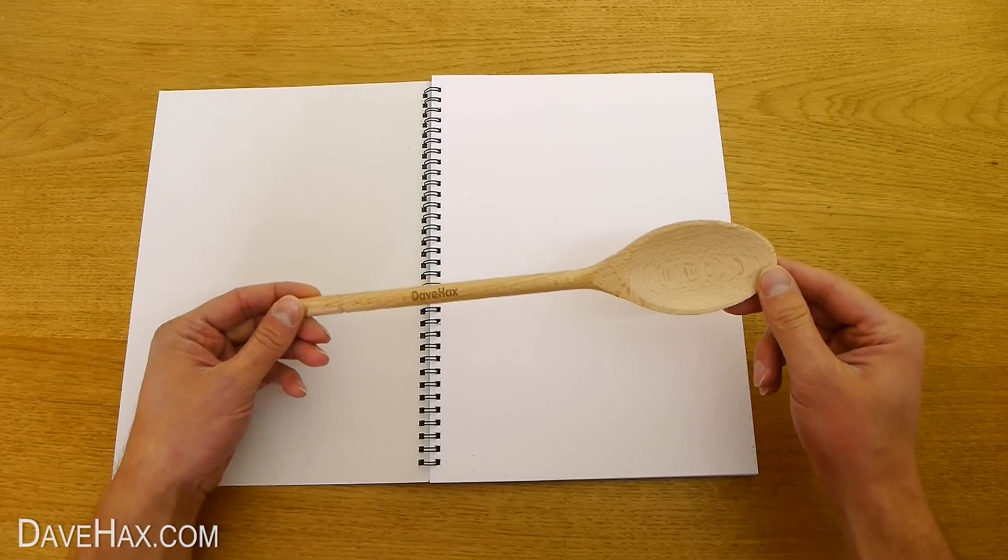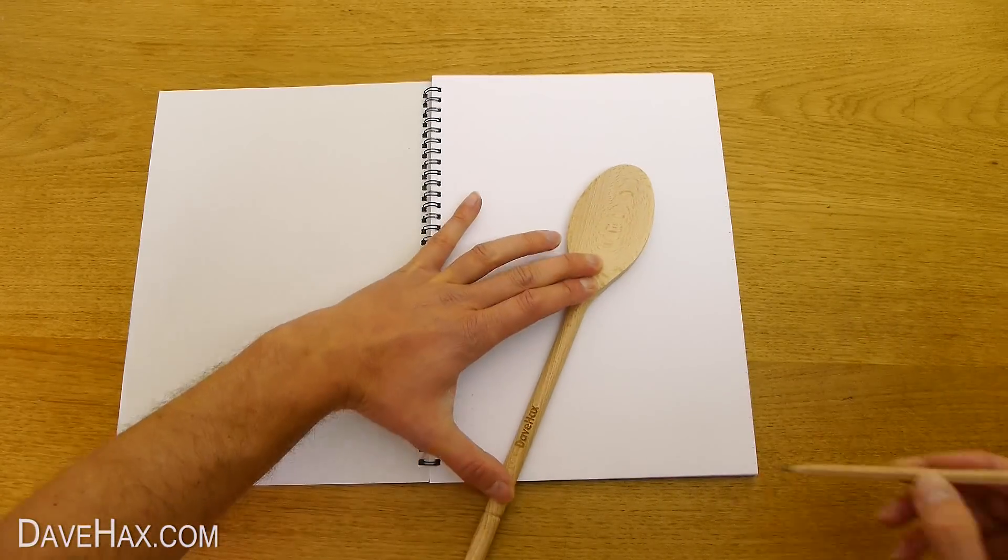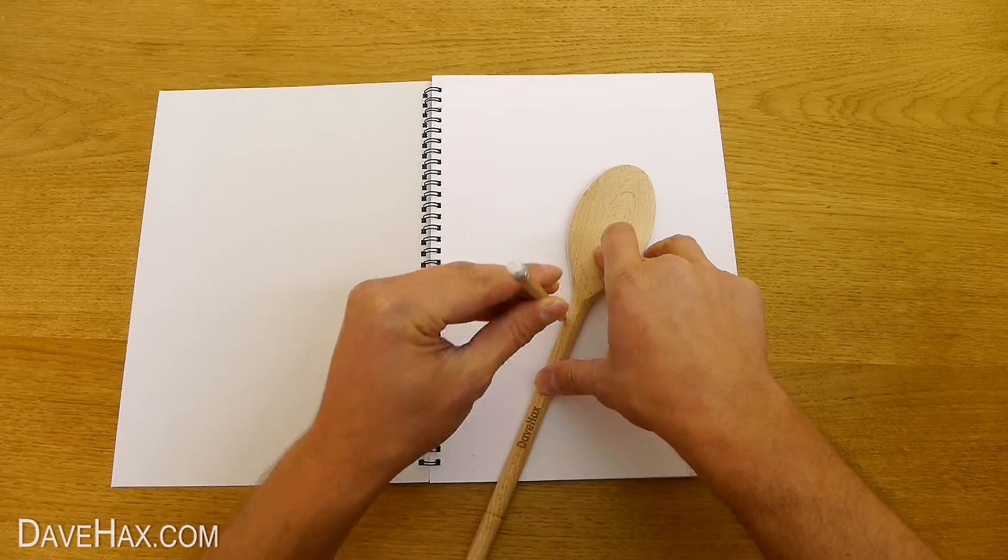Next I'm going to take a wooden spoon, place it on the paper and using a pencil carefully draw a line all the way around it.